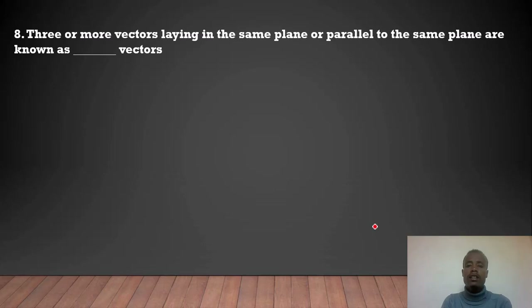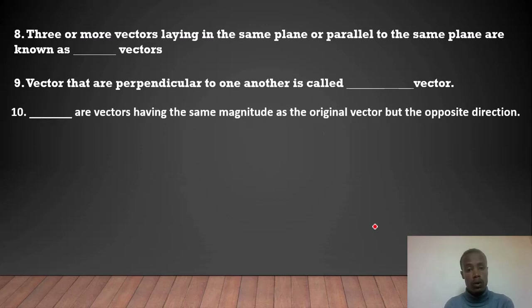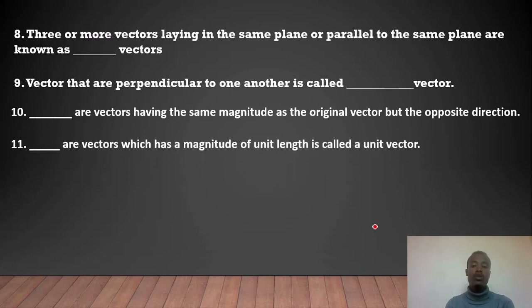Three or more vectors lying in the same plane or parallel to the same plane are coplanar vectors. Vectors that are perpendicular to one another are called orthogonal vectors. Vectors having the same magnitude as the original vector but in opposite direction are negative vectors. A blank vector that has a magnitude of unit length is called a unit vector.